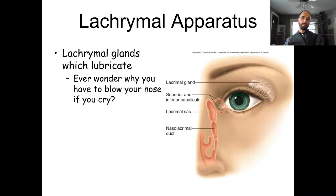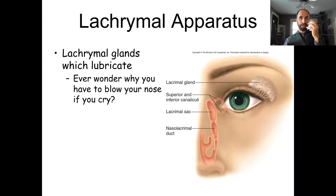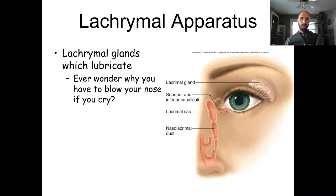The largest gland associated with the eye is the lacrimal gland, which lubricates the eye and helps wash material out. If you get debris in your eye, the lacrimal gland produces a lot of fluid to flush it out. This is also what allows crying — when you produce tears, that's called lacrimation. The gland sits on the lateral upper part of the eye.